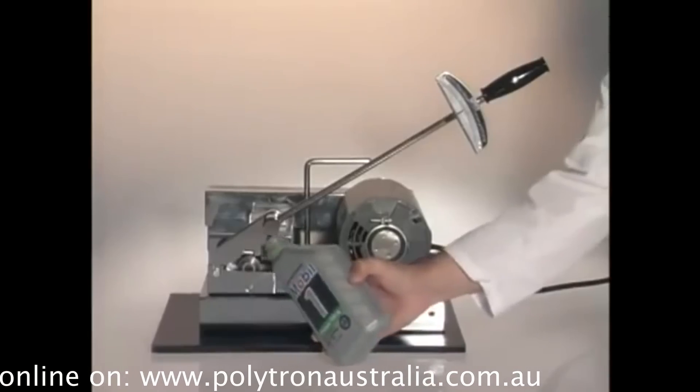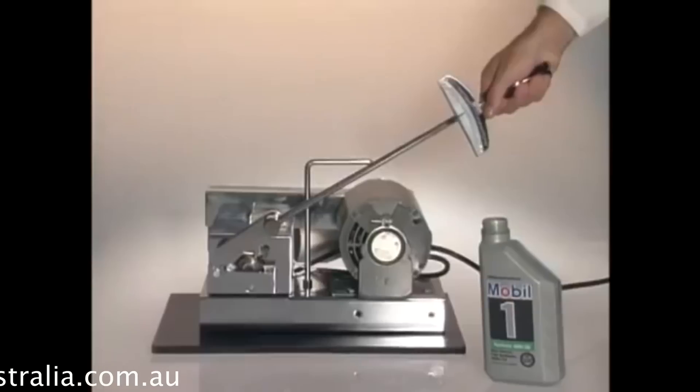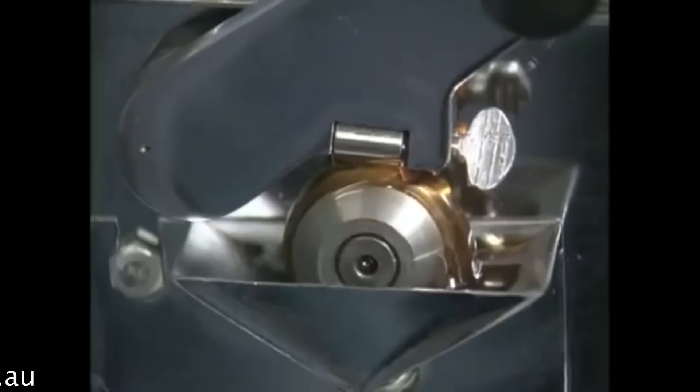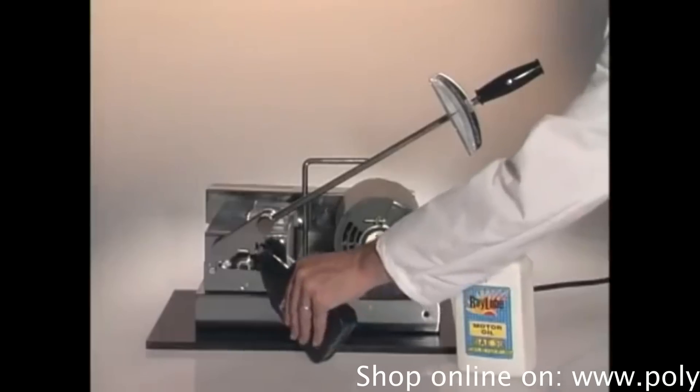Next, we will test an expensive synthetic oil, Mobile One. Again, as we apply pressure to the torque wrench, you can see smoke from the friction. This time, at 60 pounds of torque, the machine seizes up, causing similar damage to the bearing.